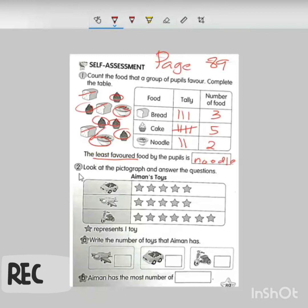Question number two. Look at the pictograph and answer the question. Aiman's toys. There are three toys - the car toy, plane toy, and the last one is the motorbike or the scooter. Look at the picture. The picture of the star represents one toy. We need to write the number of toys that Aiman has. We need to count the number for the plane toy. One, two, three, four, five. So the number is five.